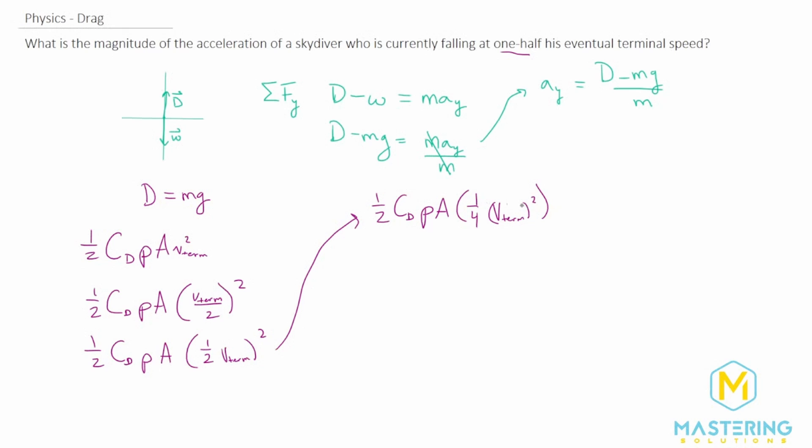So since we have this, I chose to write it this way because now what we can do is let's pull out the one-quarter. So we have one-quarter times one-half c_d rho A times v_term, terminal velocity squared. And now since we were able to pull out that one-quarter, you can see this right here is exactly what we started with for drag. So now we can plug that back in. So one-quarter times drag.